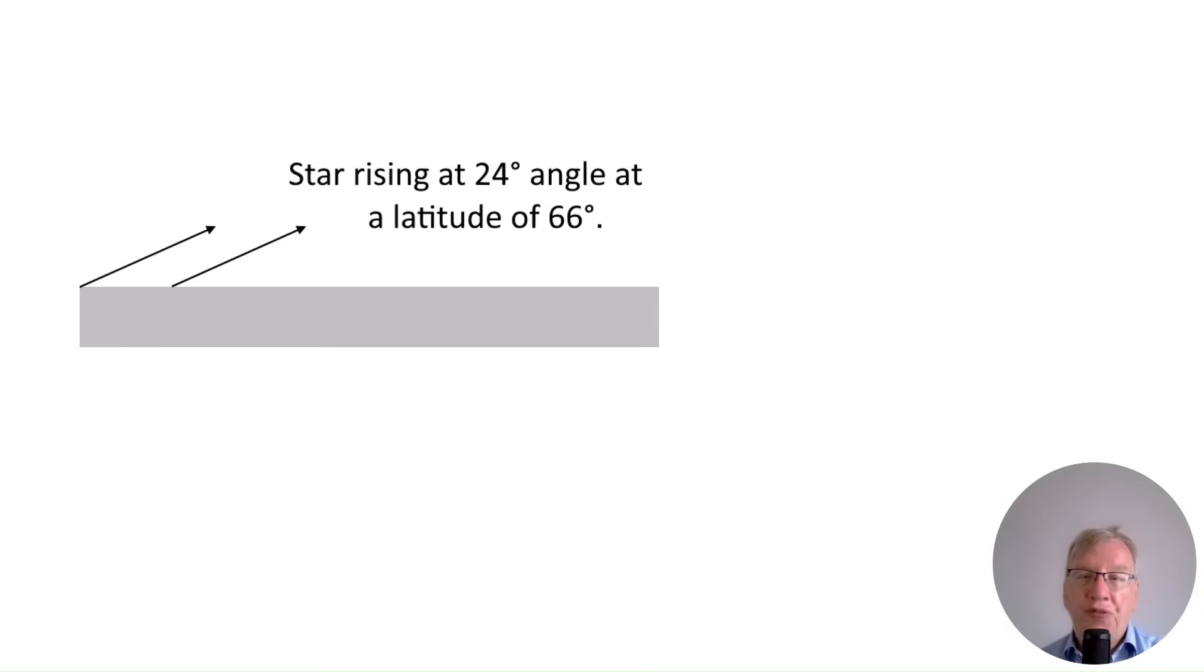Instead, Arctic travelers fix their gaze on stars low on the horizon. At this latitude, stars rise and fall slowly as you see on the image. Fixing a star at the horizon in the right direction permits you to navigate and to drive a sledge at the same time.